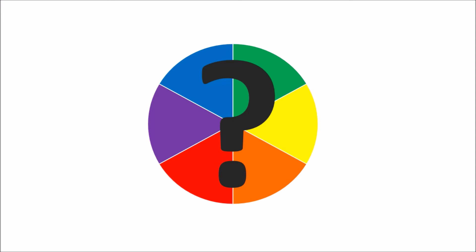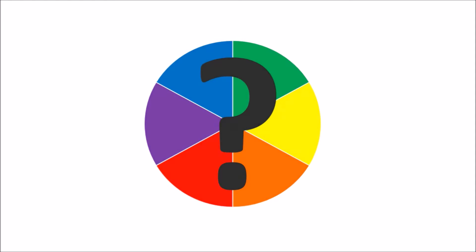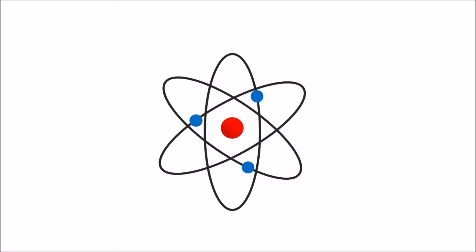but why do they burn different colors in the first place? The answer to this question is more complicated than you might think, going all the way down to the atomic scale. An atom has different allowed energy levels, or shells, for its electrons.